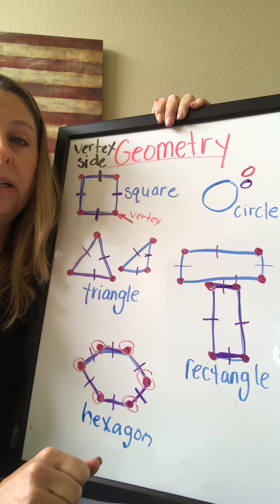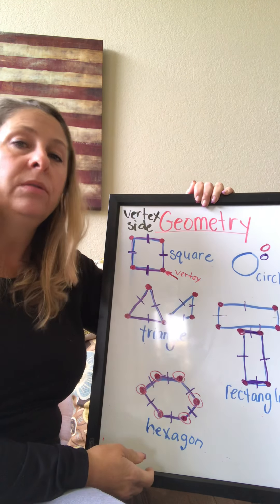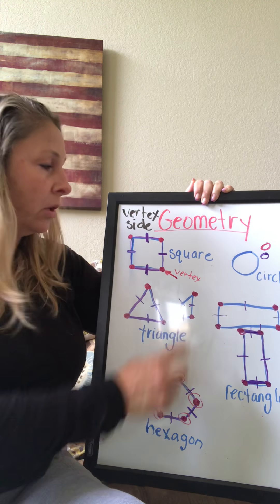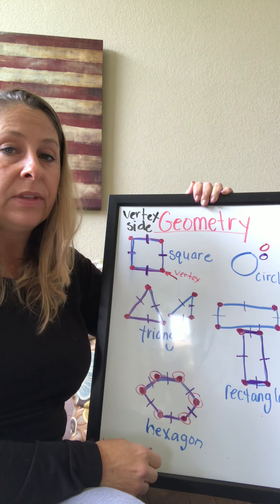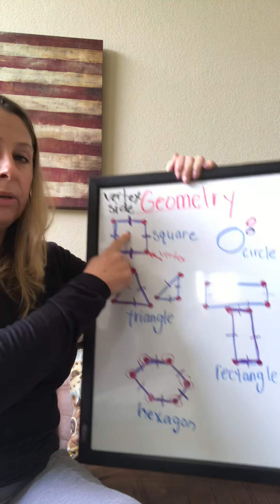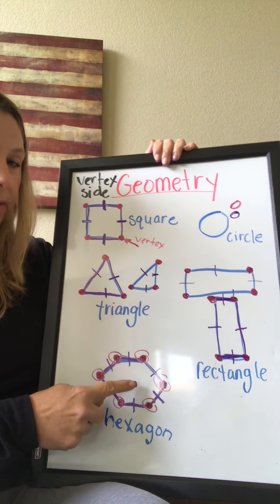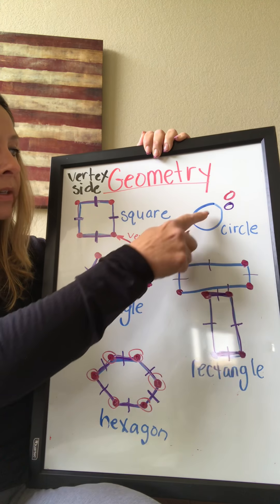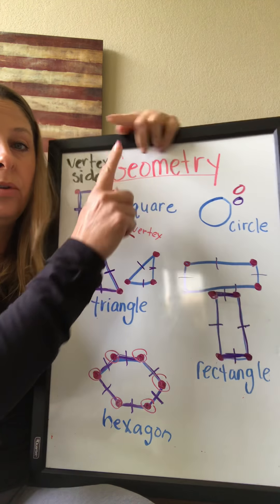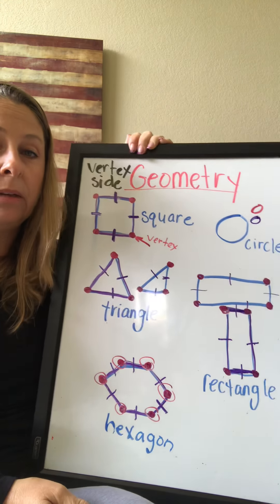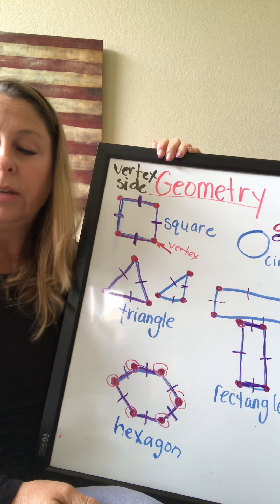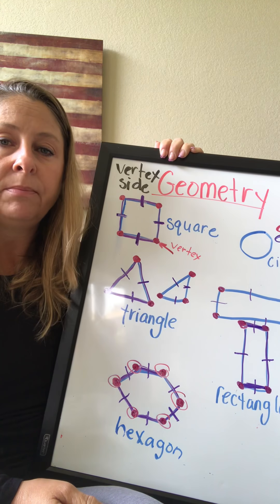So today in your math, when you're working on your math, I want you to be analyzing these flat shapes. Count their vertices — which are the corners or the points — and count the sides, which are the straight lines. You'll be working with squares, triangles, hexagons, rectangles, and circles. Don't be fooled by that circle — it has no straight lines and no corners or points where the lines meet. Have a good time in math today. Keep up the great work. I'm super proud of you. You guys are learning a lot and doing a great job. Thank you.